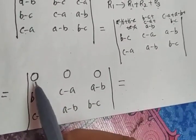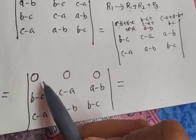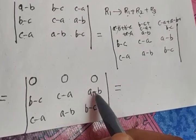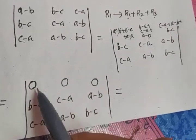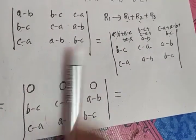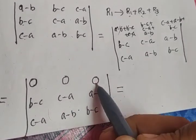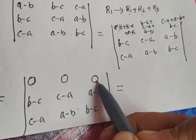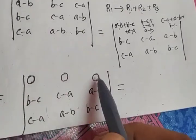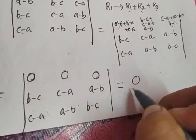The first row is completely zero. When we expand, we take each element of the first row and multiply by its minor — but 0 times any number is 0. So all three terms give 0. We can conclude: if all elements of a row or all elements of a column are 0, we can directly write the determinant value as 0 without expanding.